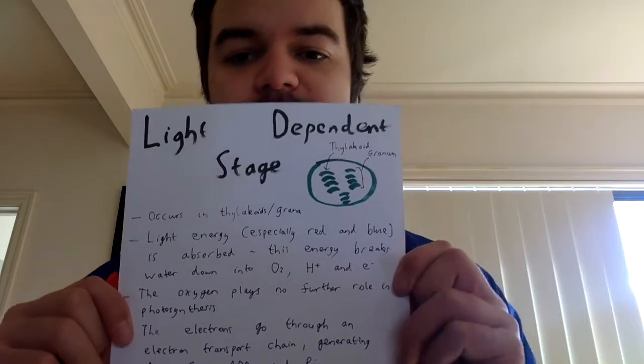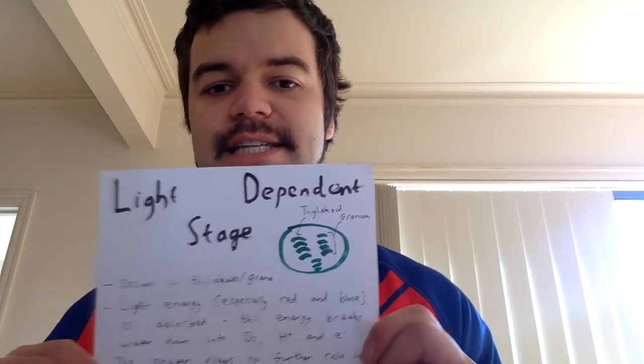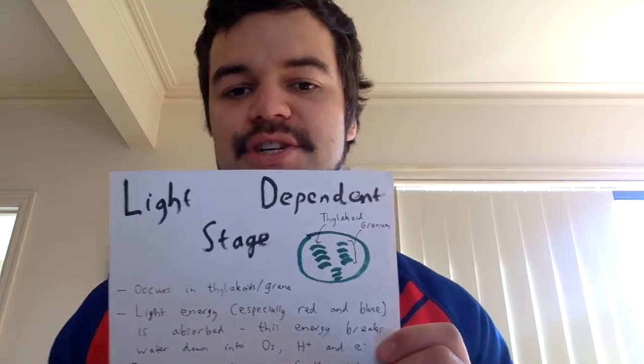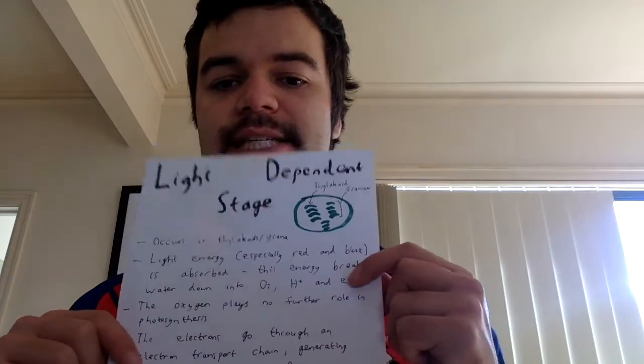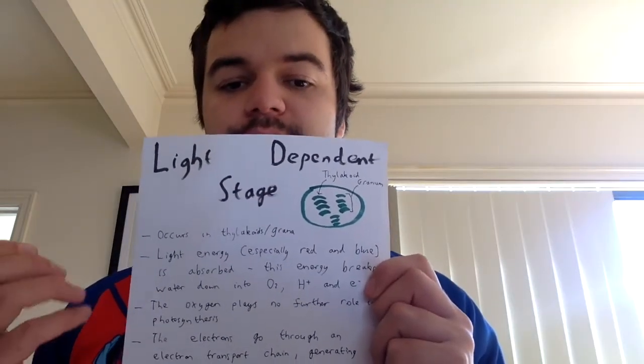I've got a plant next to me — you can see that lovely green colour. Any light hitting this, the red and blue wavelengths are being absorbed and the green is reflected. That light energy is used to break down water. We sometimes call the light dependent stage the photolysis or hydrolysis of water — it just means water breaking down due to light. It breaks down into oxygen, hydrogen (H+), and electrons (e-). The oxygen plays no further part in photosynthesis, so it just exits the thylakoids and sometimes exits the plant into the atmosphere, though sometimes it's used in plants for respiration.